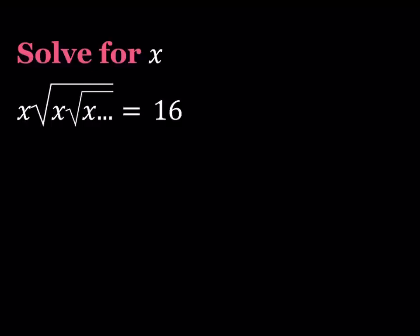Hello everyone. In this video we're going to be solving a radical equation that goes on forever. So we have x times the square root of x times the square root of x times the square root of x, so on and so forth. And the whole thing is equal to 16, and we're going to be solving for x.